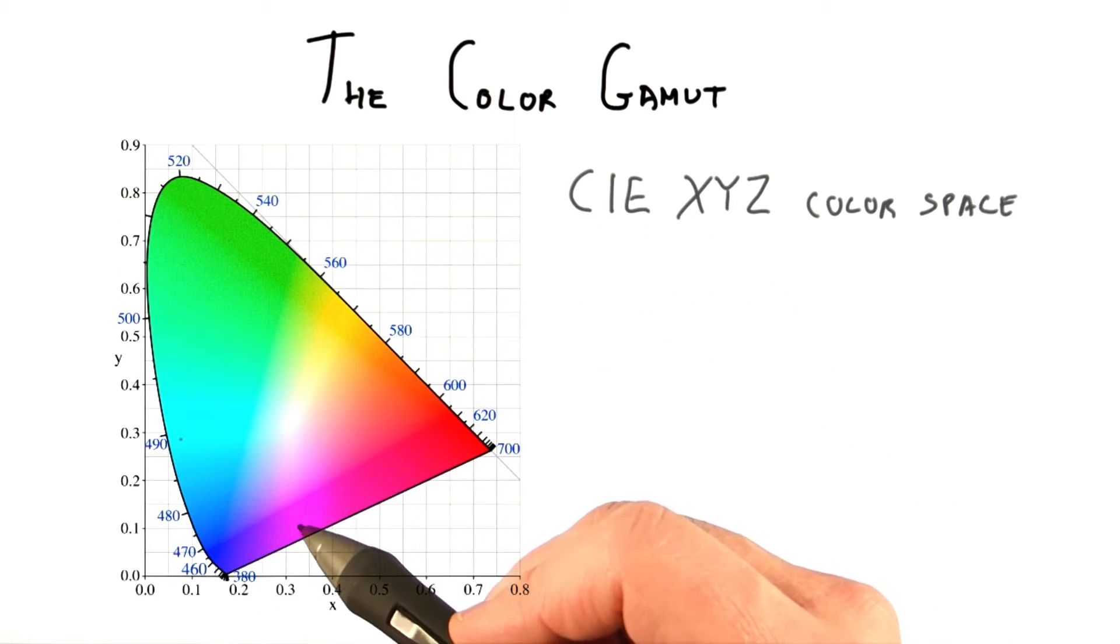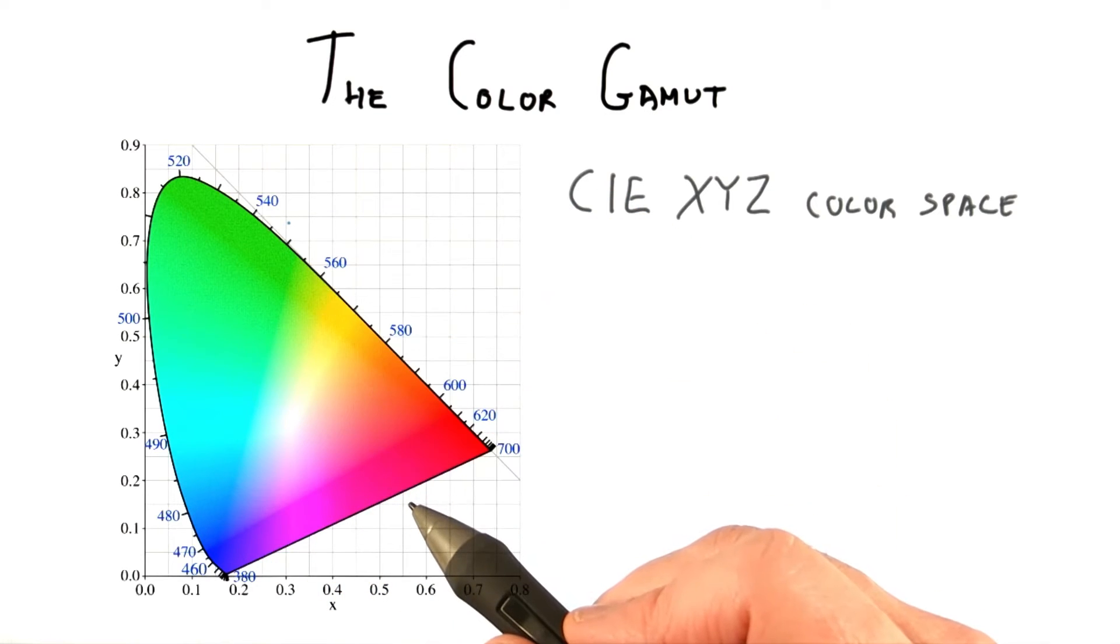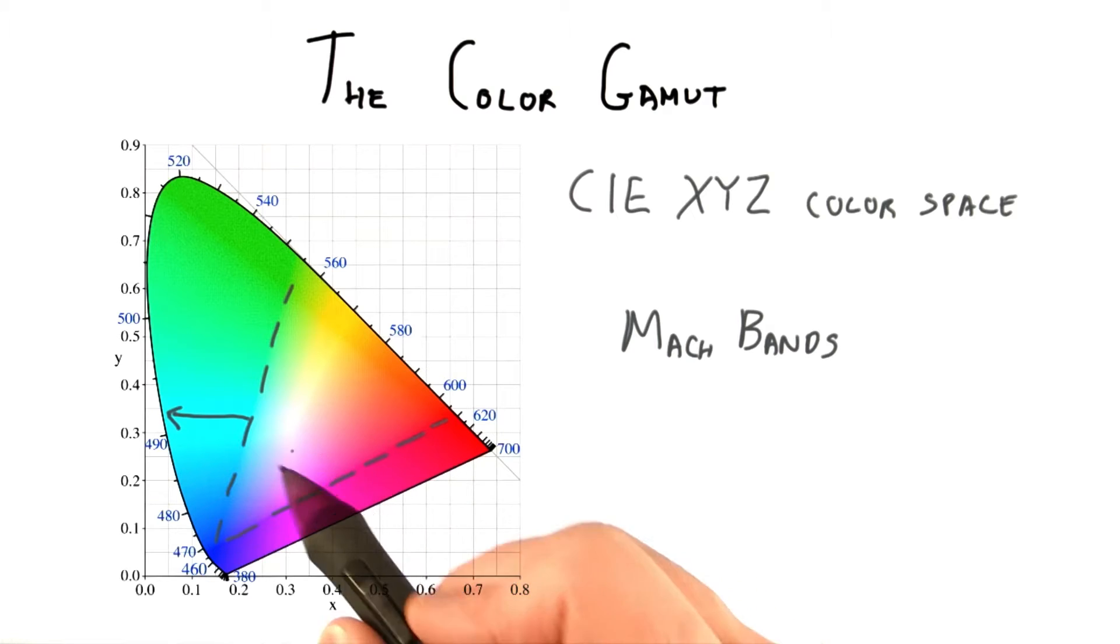You might also notice a funny artifact along here and here. I find these lines will show up more strongly if I look at my computer screen from a different angle. These bands, which are called Mach bands, are something you might run into every now and then in computer graphics.